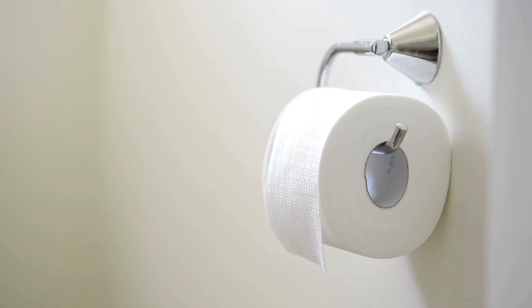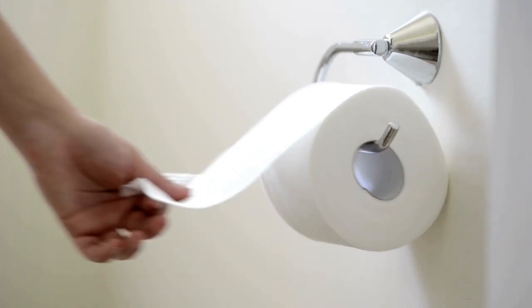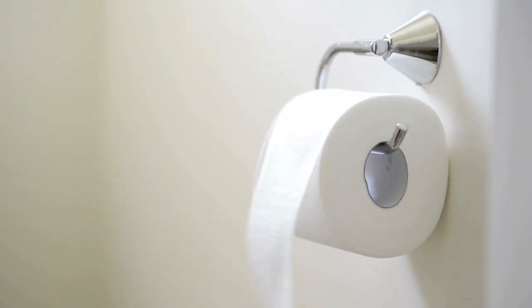A toilet tissue paper holder's standard height is 26 inches. This specific height is determined globally in order to accommodate all types of people.